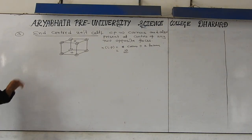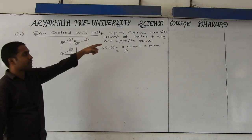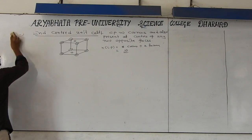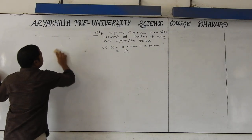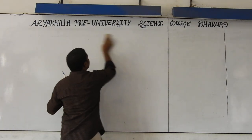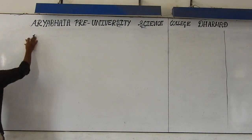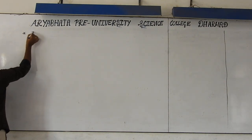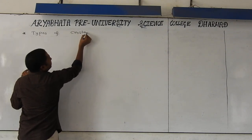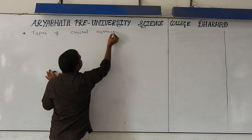This is a very important classification of different types of unit cells — primitive as well as centered; under centered: body-centered, face-centered, and end-centered unit cells. Now we are discussing a very important concept — types of crystal lattices, also called types of crystal systems or space lattices.